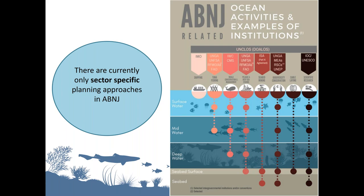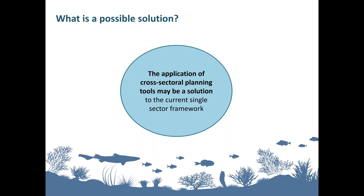Currently there are only sector-specific planning approaches in ABNJ, not cross-sectoral ones. As activities increase within ABNJ, it's unclear how the various tools applied by different sectors may interact. Applying cross-sectoral planning tools currently used within national waters to ABNJ may be a solution — for example, marine spatial planning. The ABNJ Deep Seas Project aims to explore this space by developing a methodology for marine spatial planning to discuss with the two pilot regions.